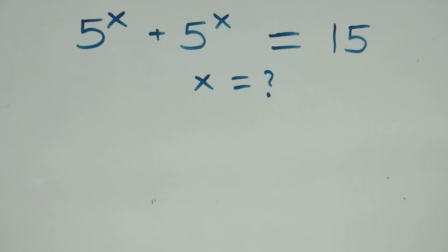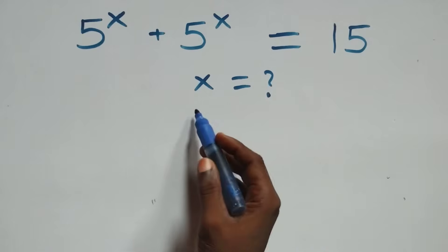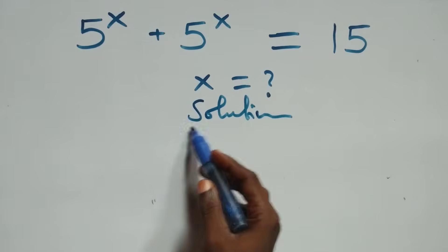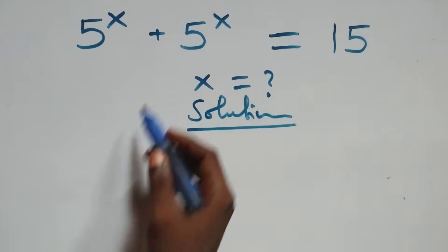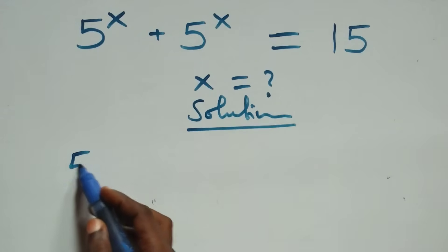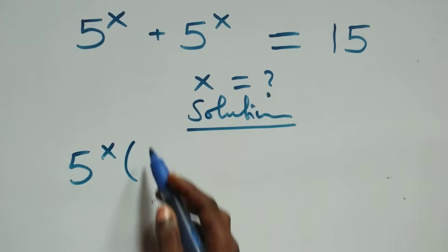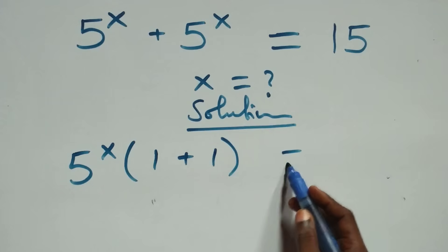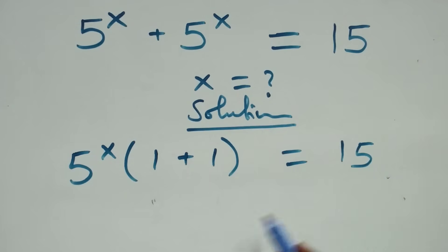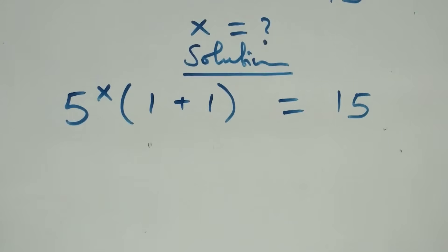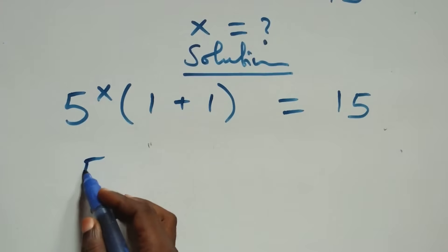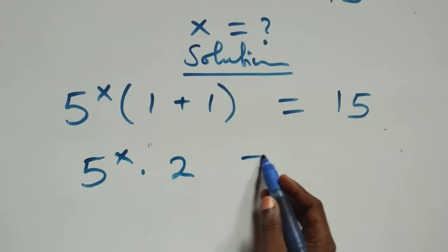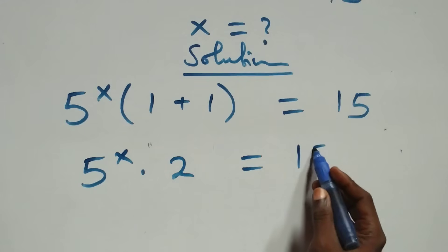Hello, you are welcome. How to solve this nice exponential equation. What we have here is a factor: 5 raised to power x, that is 5 raised to power x, into bracket we are left with 1 plus 1, in brackets, equals to 15. This is the same thing as 5 raised to power x times 1 plus 1, that's 2, equals to 15.